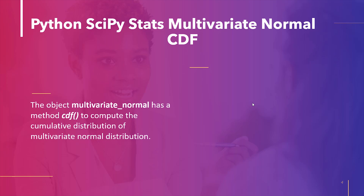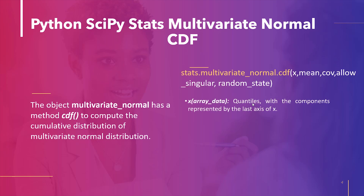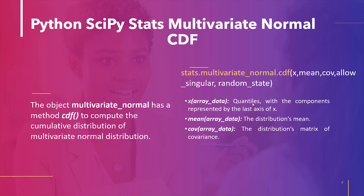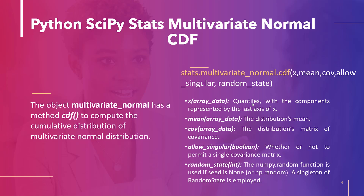The syntax of the method is as follows. Parameters: x represents quantiles with the last axis of x denoting the components; mean is the mean of the distribution, by default 0; cov is the covariance matrix of the distribution, by default 1; allow_singular: whether to allow a singular covariance matrix, by default False; random_state: if seed is None, the numpy.random.RandomState singleton is used; if seed is an int, a new RandomState instance is used seeded with seed; if seed is already a generator or RandomState instance, that instance is used.